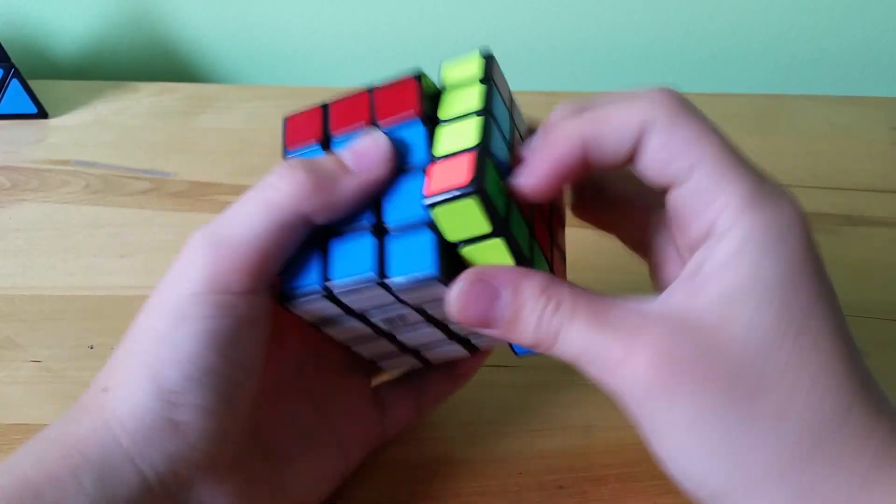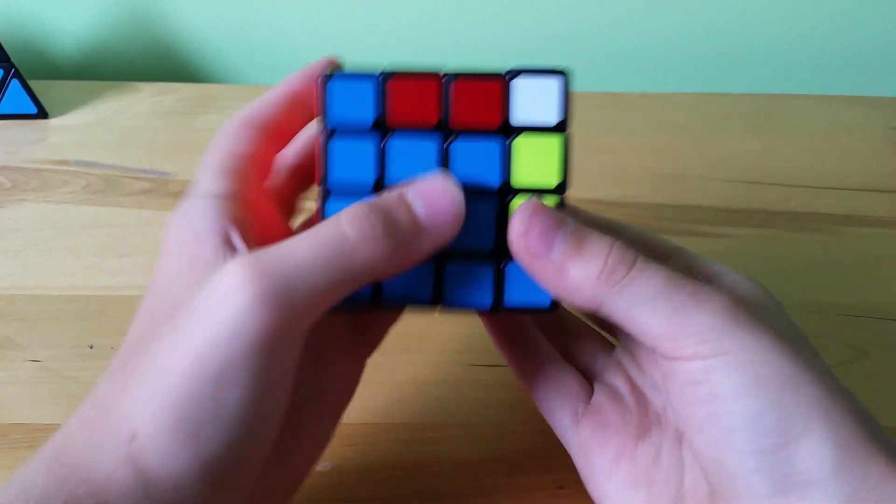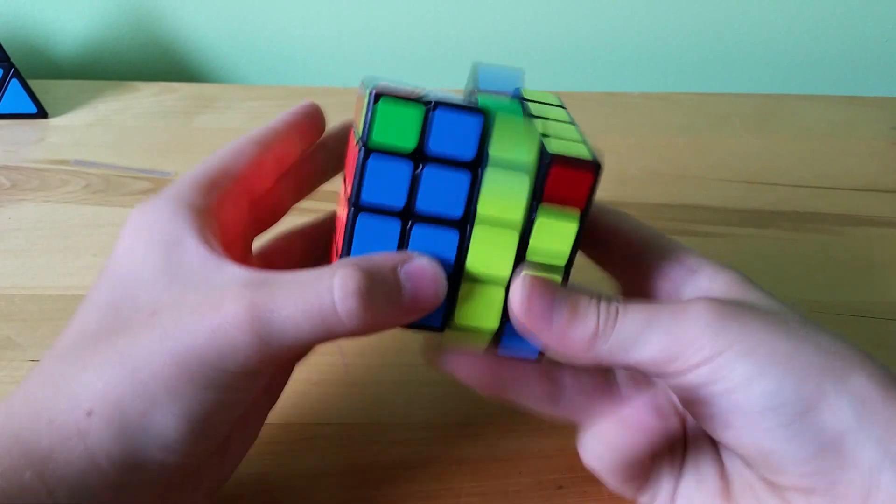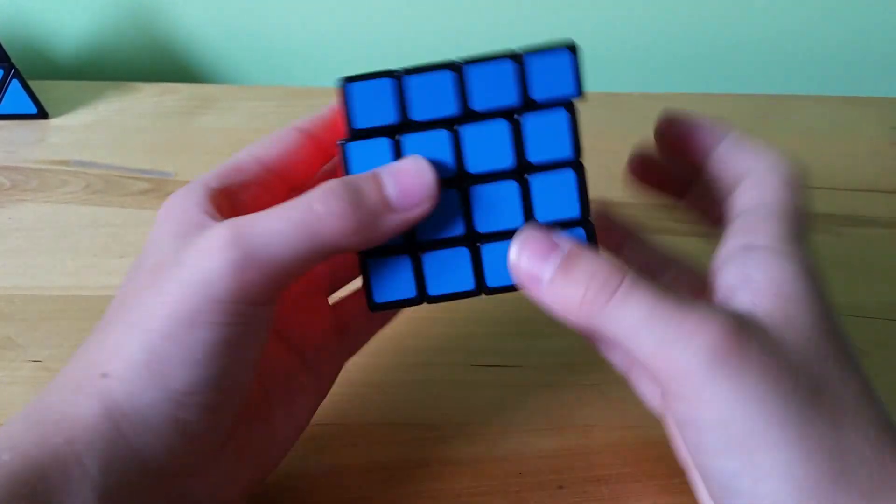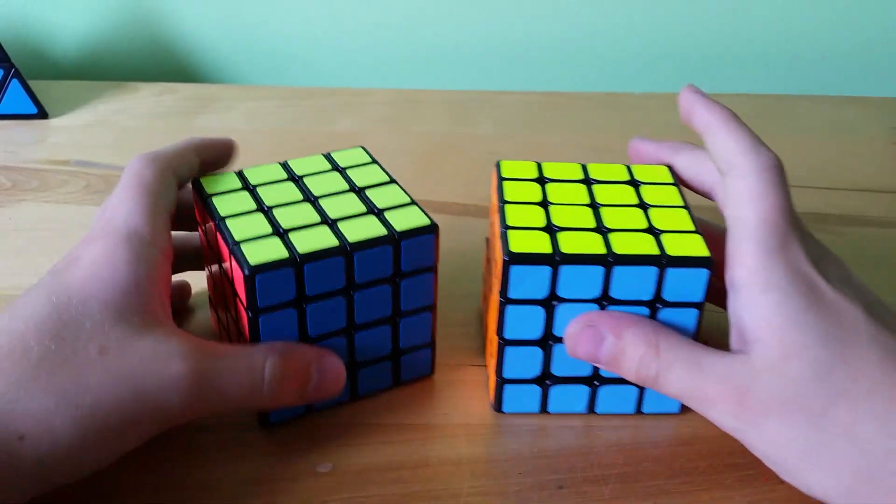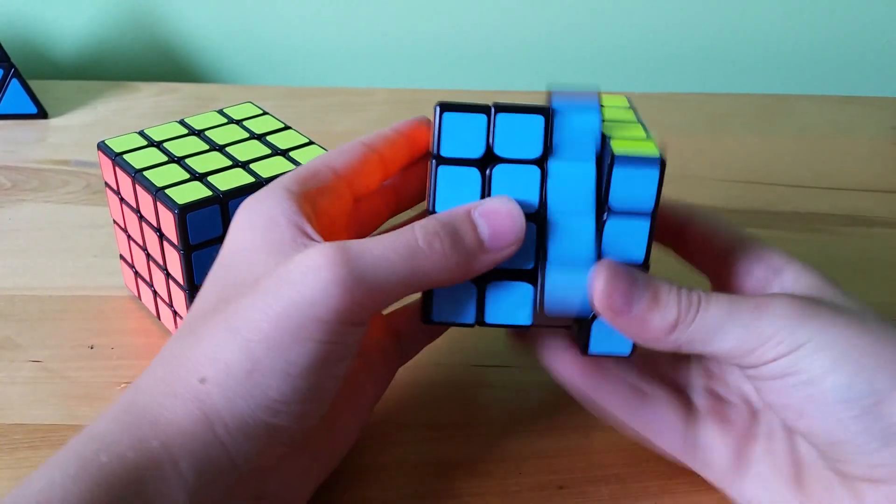Sorry, this isn't a very good execution because this is my Moyu Aosu and it's really bad. That's why I used the Yuxin. Go check out that review. So yeah, those two are both really great parity algorithms.